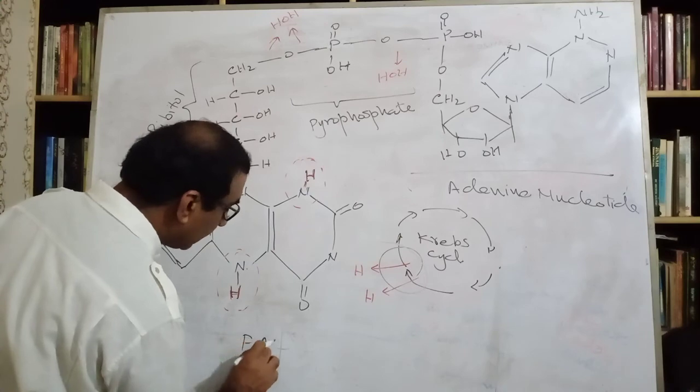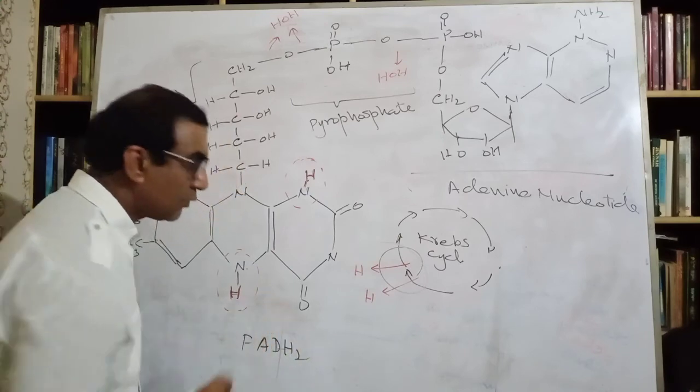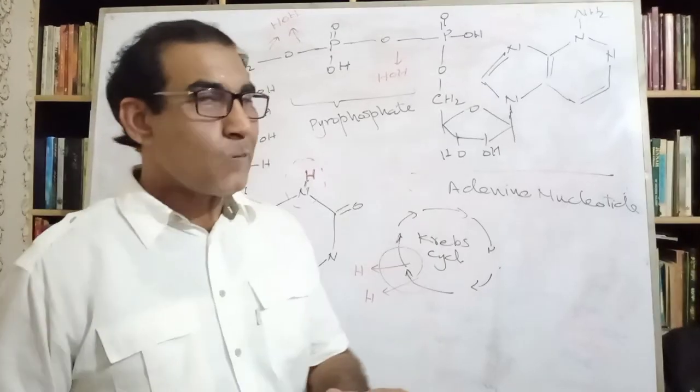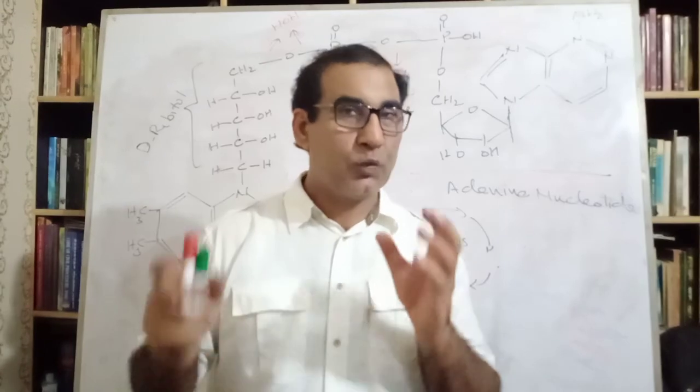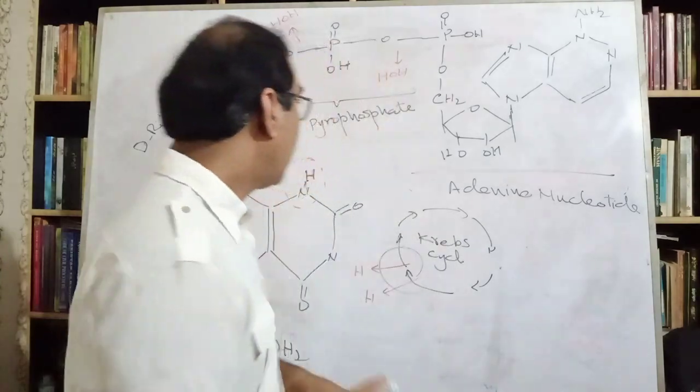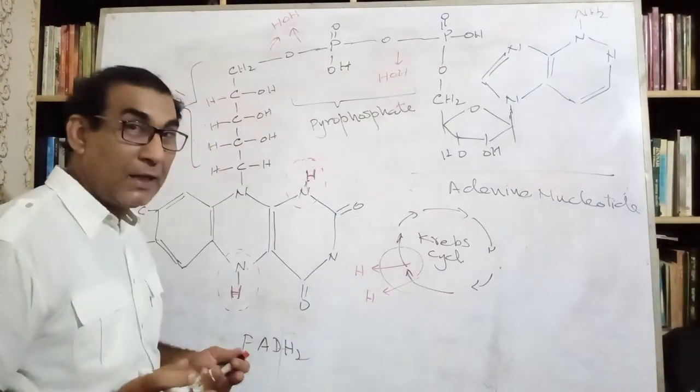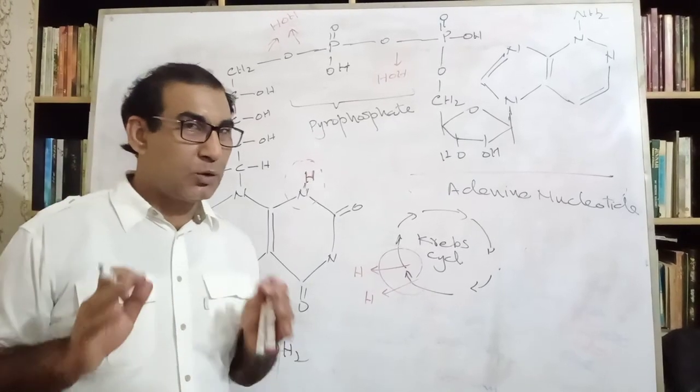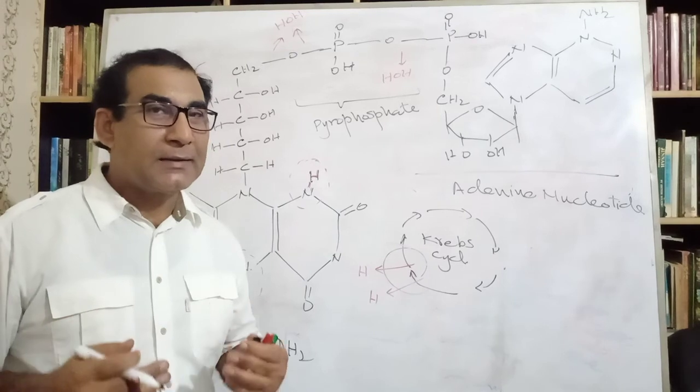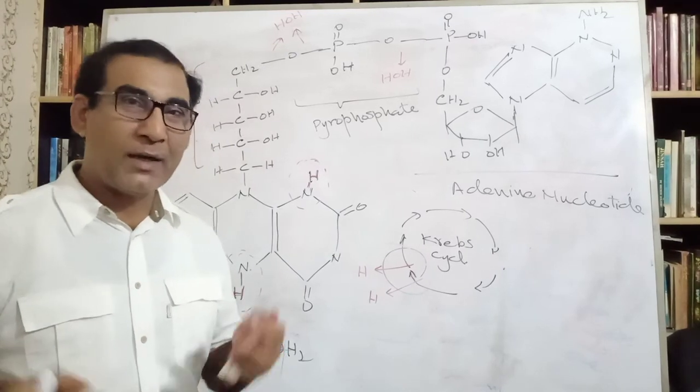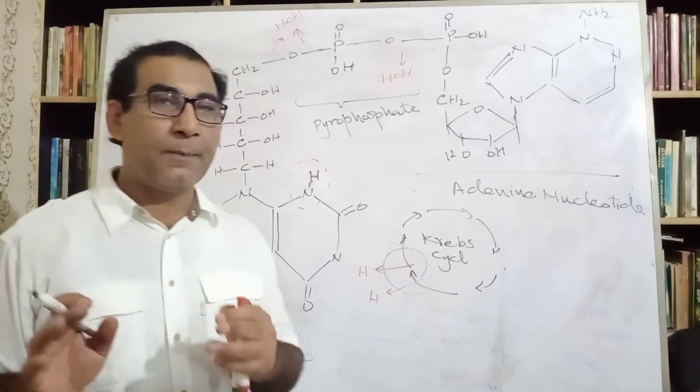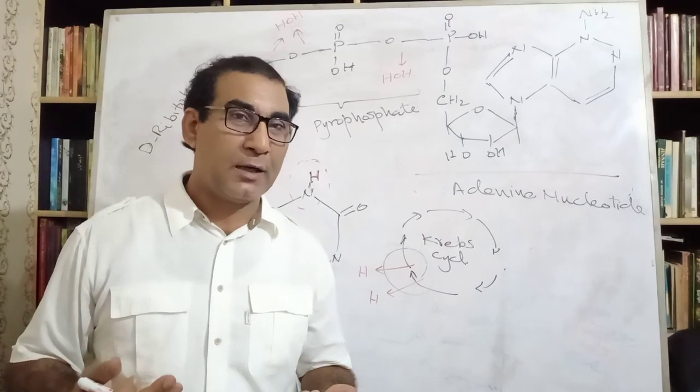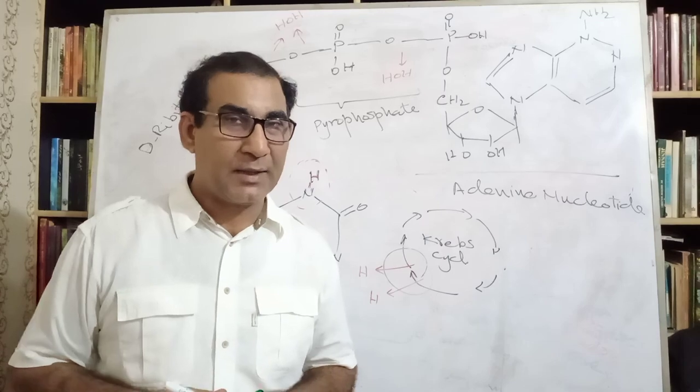This is how FAD has become FADH2. Thank you very much and in the next lecture you will understand how NAD is converted into NADH and we will try to answer to this question why NAD, when it is reduced, why doesn't it become NADH2? Why is it NADH? We'll understand in the next lecture. Thank you very much.